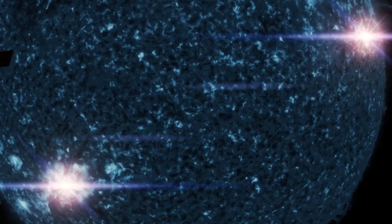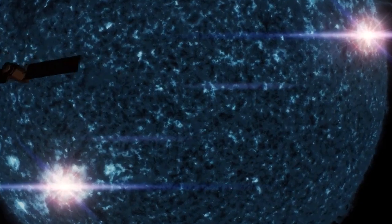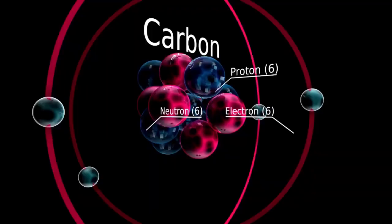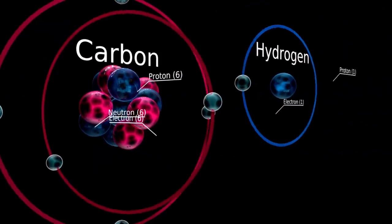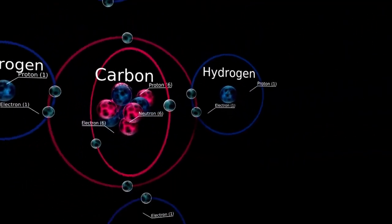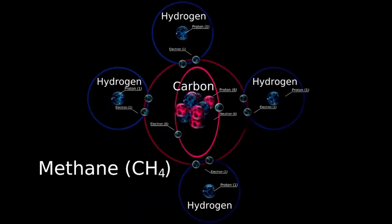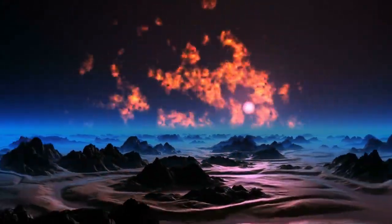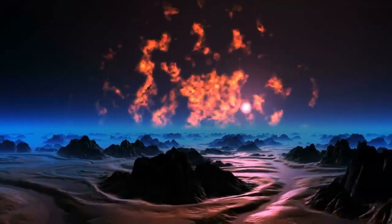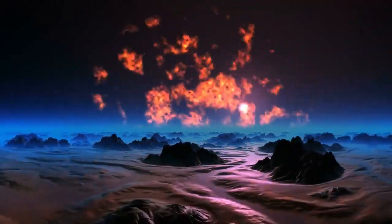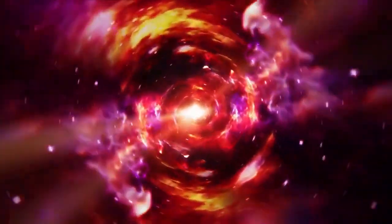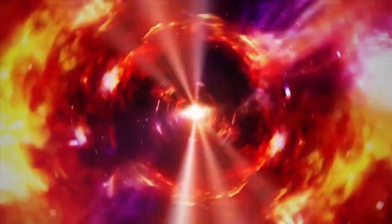At first, some speculated that this dimming was merely part of the natural life cycle of a star. However, as time went on, other theories started to surface, each more alarming than the last. The dimming of Betelgeuse was first noted toward the end of 2019, when astronomers began observing a significant and prolonged decrease in the star's brightness. Unlike other dimming events that occur naturally in stars, especially massive ones like Betelgeuse, this one was unusually drastic and continued for an extended period.